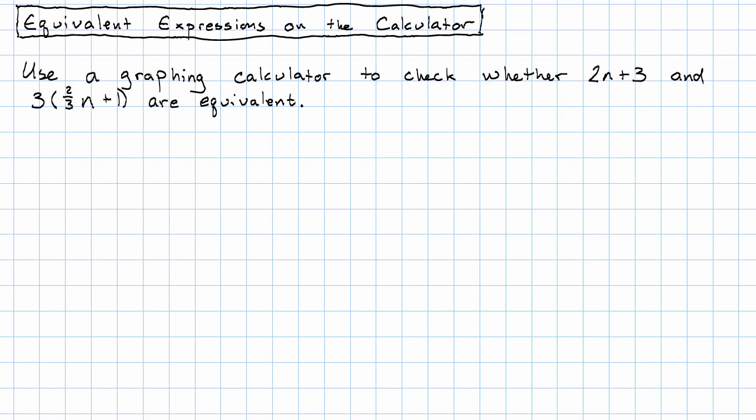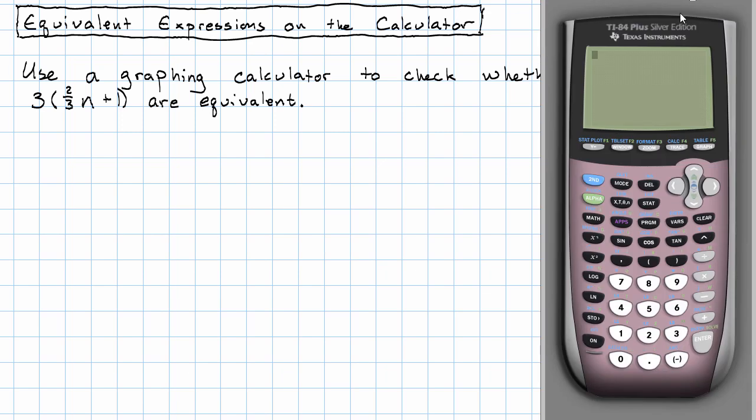Let's say we want to use our graphing calculator to check whether the expression 2n plus 3 is equivalent to the expression 3 times 2 thirds n plus 1. How would we do that? Well, taking a look at the calculator, we see this Y equals button, and that gives us a place where we can enter a whole bunch of different expressions.